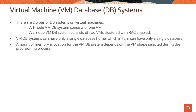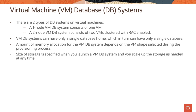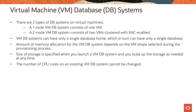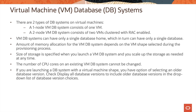The amount of memory allocation for the VMDB system depends on the VM shape selected during provisioning. The size of storage is specified when you launch a VMDB system and you can scale up storage as needed at any time. However, note that the number of CPU cores on an existing VMDB system cannot be changed at this time. If you are launching a DB system with a virtual machine shape, you have the option of selecting an older database version by checking 'display all database versions' in the drop-down list.